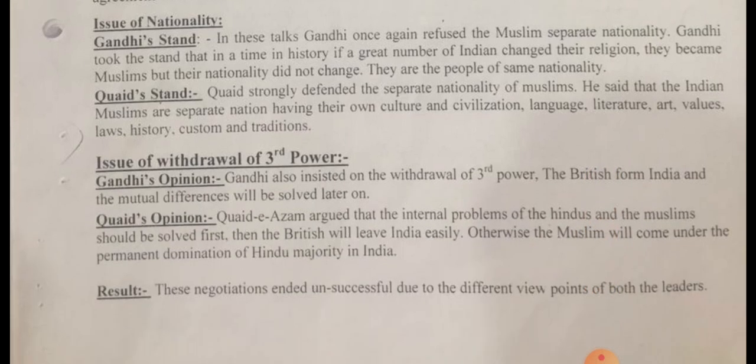The second issue discussed between both the leaders was the withdrawal of the third power, that was the British. Gandhi said that first both parties should try to withdraw the British from the subcontinent, and after they leave India, mutual differences would be solved later on. But Quaid said that first the mutual problems between Hindus and Muslims should be solved, and then it would be easy for the British to leave India. Otherwise, the Muslims would become permanent subjects under the permanent domination of the Hindu majority. These negotiations ended unsuccessfully because both leaders had different viewpoints.